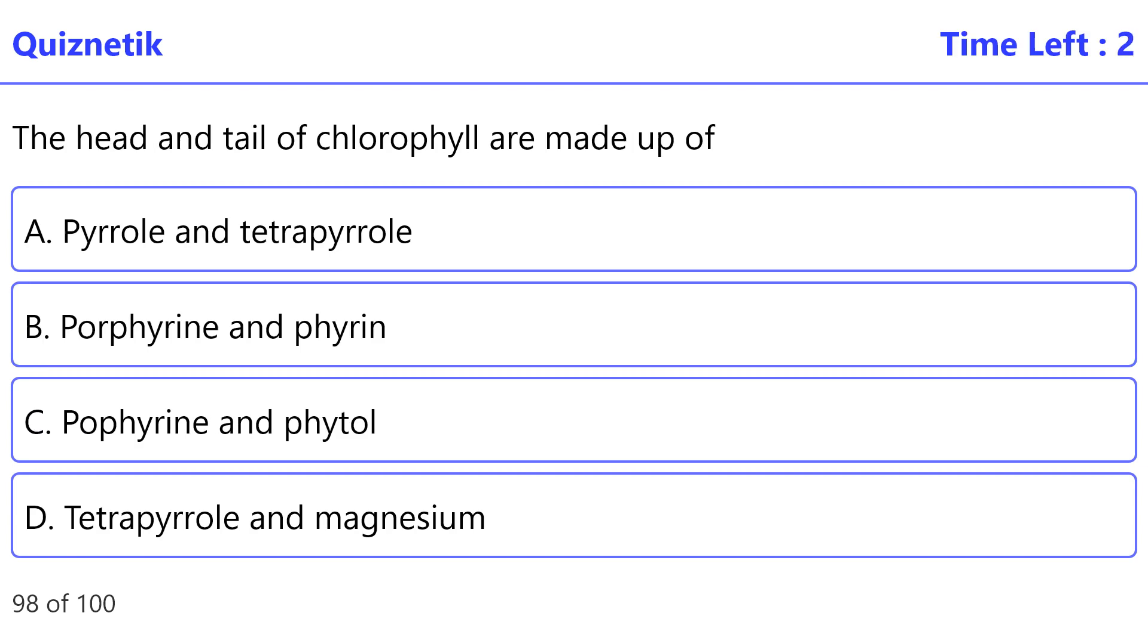The head and tail of chlorophyll are made up of - the correct option is C: porphyrin and phytol.